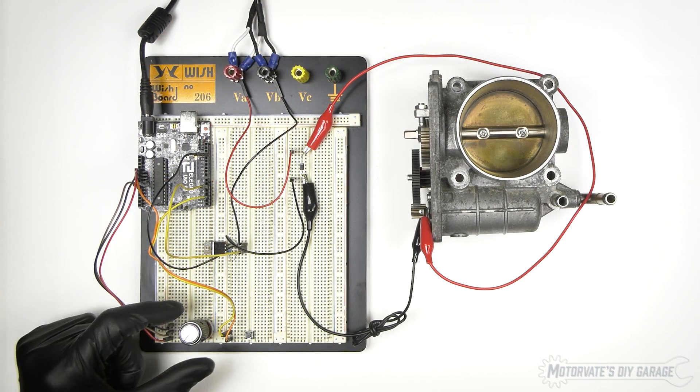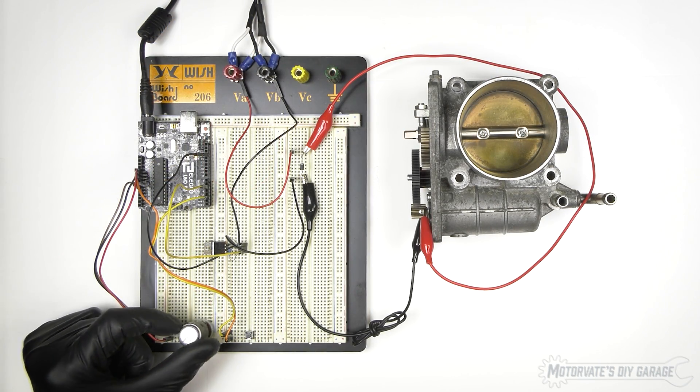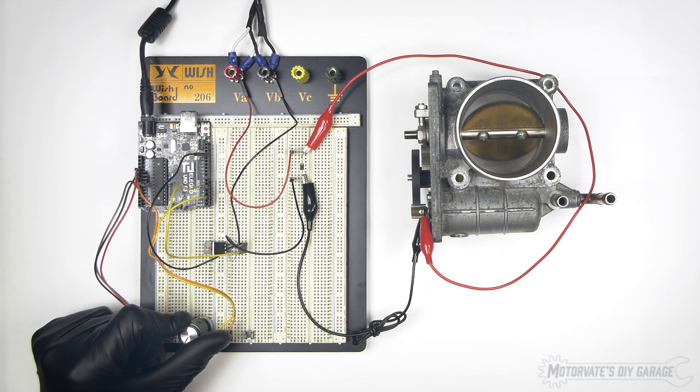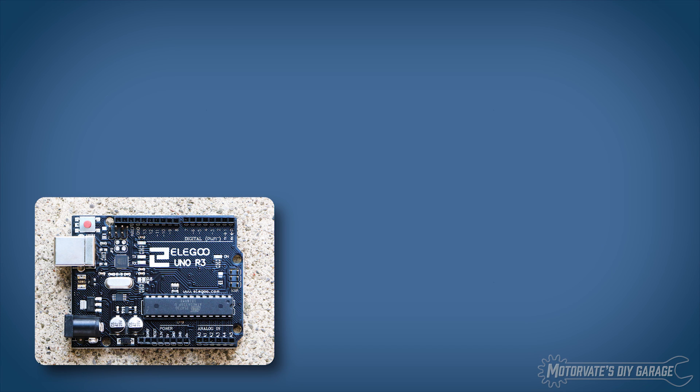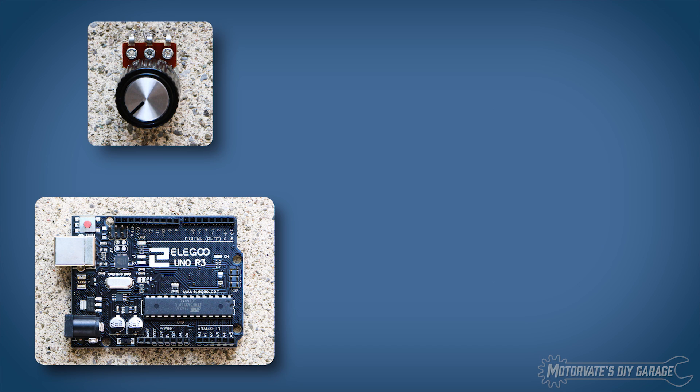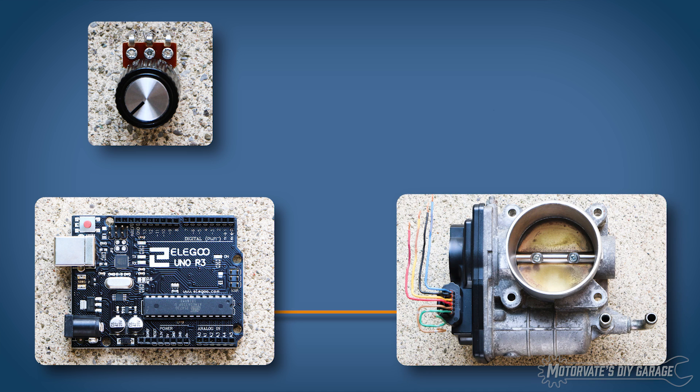Alright, let's wrap up this episode. I hope you have a better understanding of how drive-by-wire systems work. We used a $13 Arduino UniClone from Amazon to read the voltage output of a position sensor, which then sent a pulse width modulated signal to the electric motor in the throttle body.